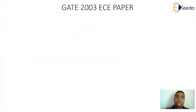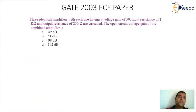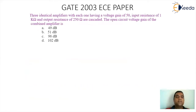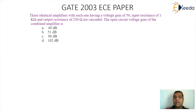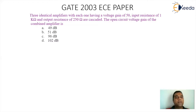This question is from the Gate 2003 EC paper. The question is: three identical amplifiers, each having a voltage gain of 50, input resistance of 1 kΩ, and output resistance of 250 Ω, are cascaded. The open circuit voltage gain of the combined amplifier is: option A 49 dB, option B 51 dB, option C 98 dB, option D 102 dB. Before we start with the solution, let's look at the equivalent circuitry we will be using for calculation.